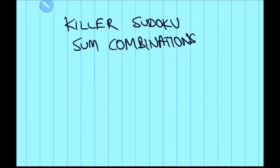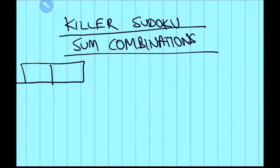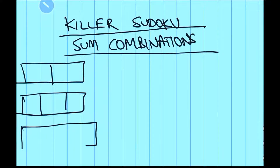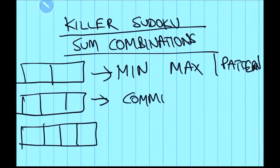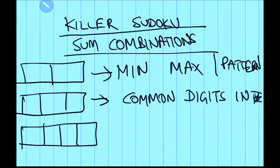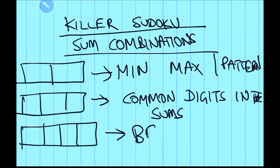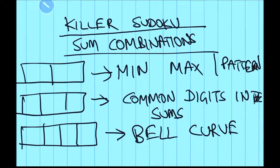Hello friends, today we are going to talk about killer sudoku sum combinations for 2-cell, 3-cell, and 4-cell cages. We will discuss min-max and patterns, common digits in the sums, and we will see the interesting bell curve of possible number of combinations in the sum. All these techniques will help you solve killer sudoku easily.